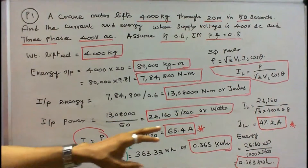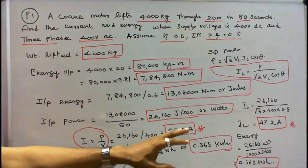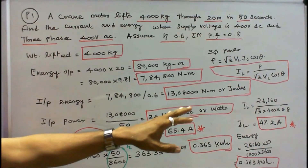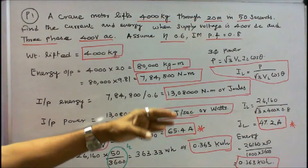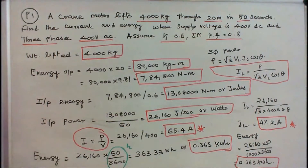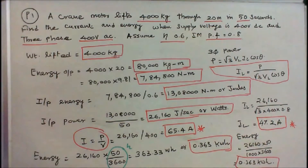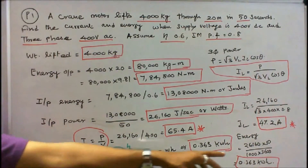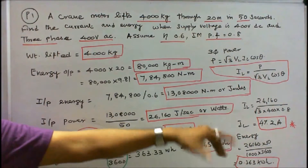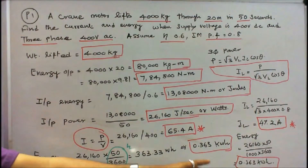Energy is equal to 26,160 into 50 divided by 1000 into 3600, converting to kWh, that is equal to 0.363 kWh.